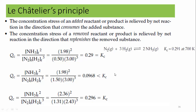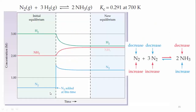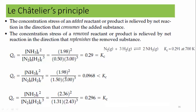When you solve with the new equilibrium values, you get 0.296, which equals the equilibrium constant. So Qc now equals Kc. This demonstrates that you can maximize the concentration of the product by adding reactants, while the equilibrium constant itself remains unchanged — which is the objective in any industrial chemical reaction.